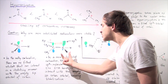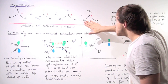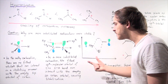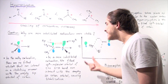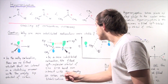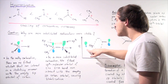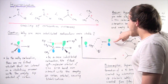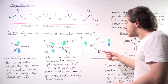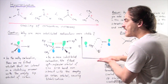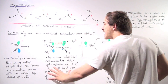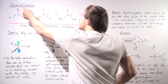In the methyl carbocation, there are no filled orbitals that can interact in a stabilizing manner with the empty 2p orbital of the central carbon. In the tertiary carbocation, however, the filled sp3 hybridized molecular orbital of the carbon-H bond can interact with the empty 2p orbital, causing a stabilizing interaction. This interaction is known as hyperconjugation.